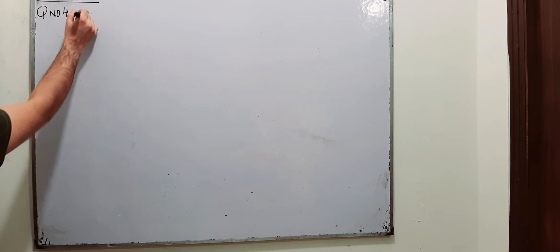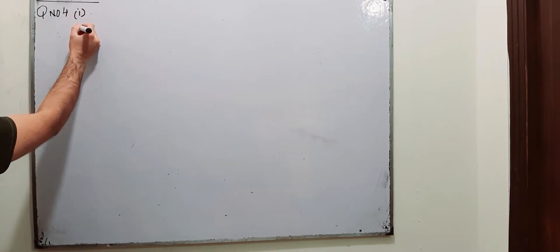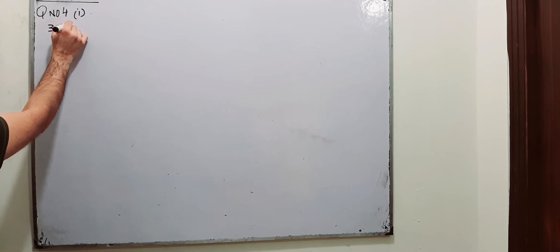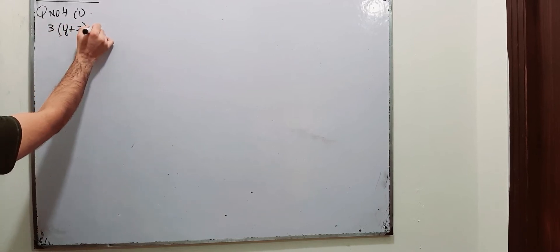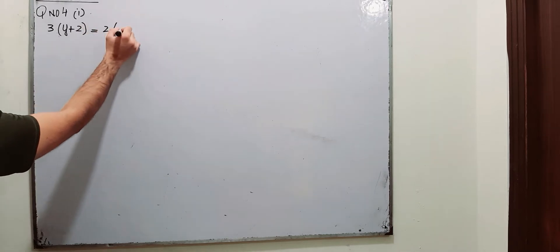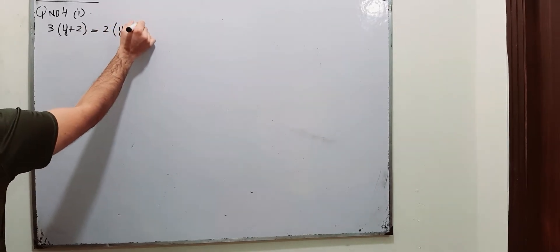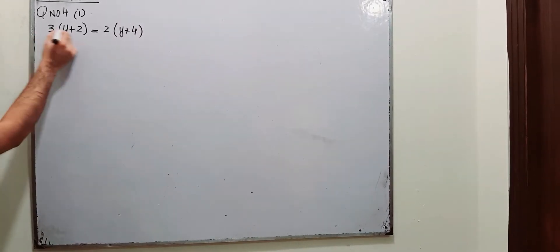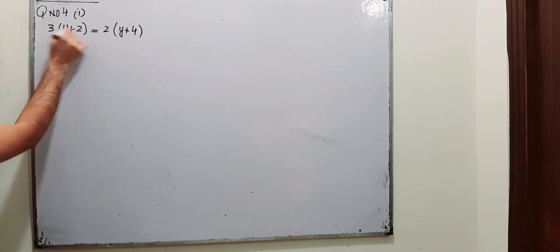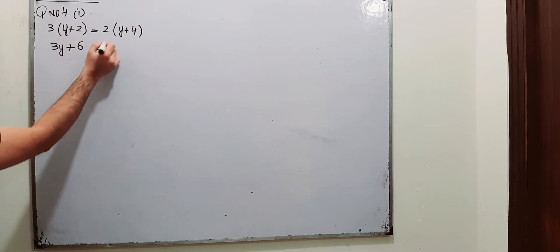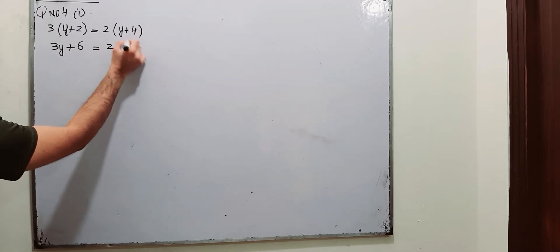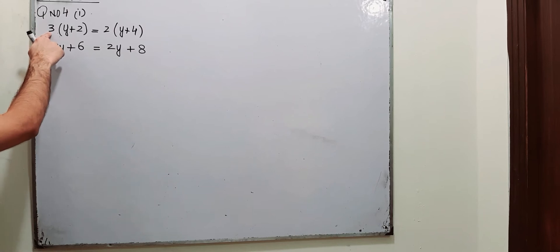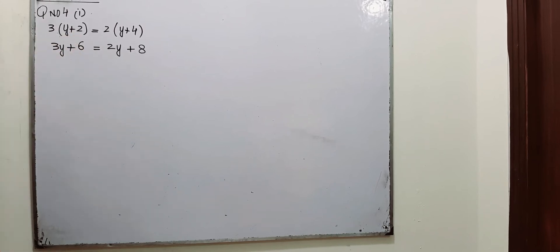So part number i, question number 4: 3 multiplied by, we have a bracket here, y plus 2, that is equal to 2 multiplied by y plus 4. Step number 1 is to open the brackets. So 3 multiplied by y is 3y, 3 multiplied by 2 is 6. 2 into y is 2y, 2 into 4 is 8. The number outside is to be multiplied by all the terms inside.